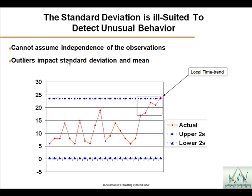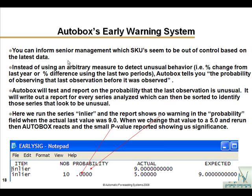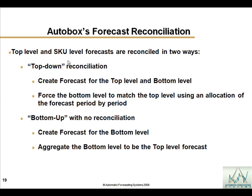This is the early warning system report. Whenever you have data under the probability column, you'll be informed that this series in the most recent period had something unusual. It's a great way — if you have 1,000 SKUs — to sort the file and identify the top offenders that had a high or low value in the most recent period. You can also do top-down and bottom-up reconciliation with AutoBox.